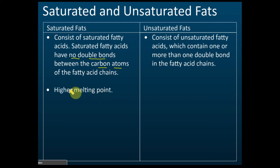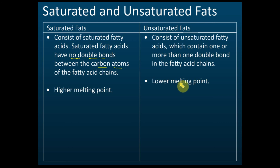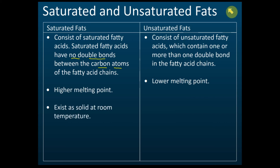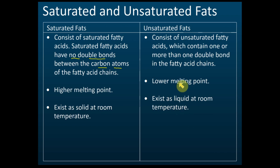Saturated fats have a higher melting point, and unsaturated fats have a lower melting point. This is the same as with saturated and unsaturated hydrocarbons — the same rule applies. The reason is that unsaturated fats have fewer hydrogen atoms because when there is a double bond, there are two fewer hydrogens compared to saturated fats. With fewer electrons in the molecule, the melting point is lower. Therefore, saturated fats usually exist as solids at room temperature, while unsaturated fats usually exist as liquids at room temperature.